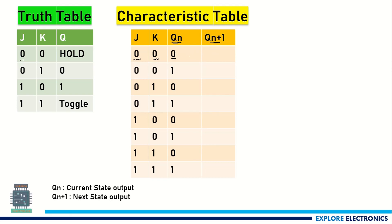When J=0, K=0 is the input, the output of the flip-flop will be in hold state. Since J is 0 and K is 0, it will be holding the state as it is, so the next state Qn+1 is 0.